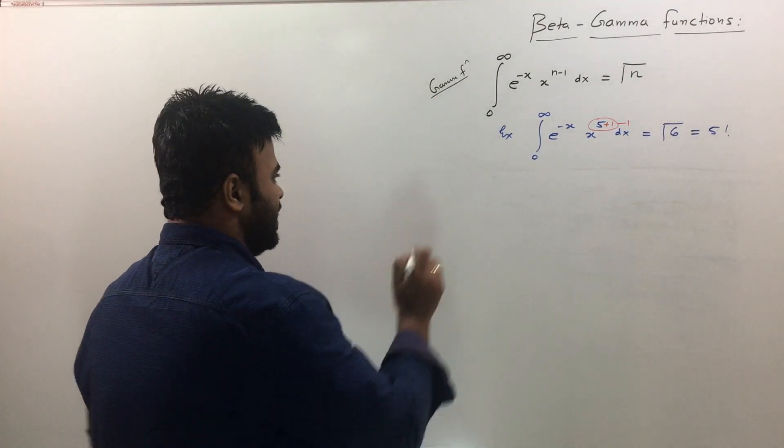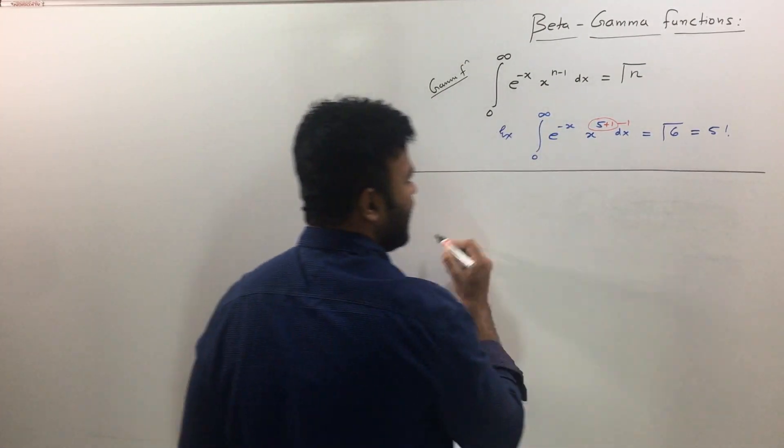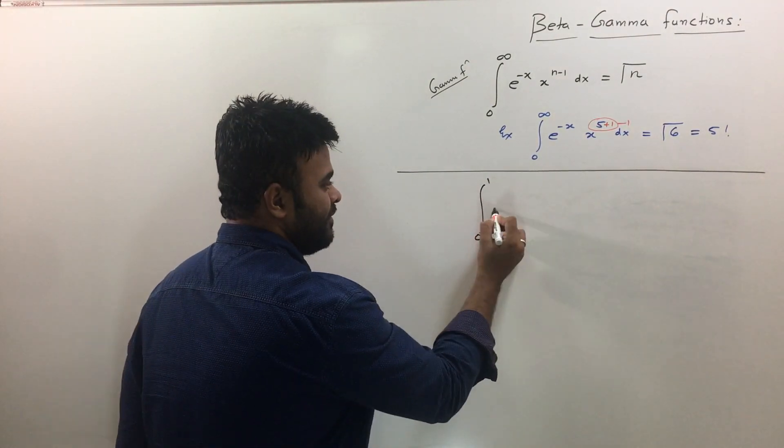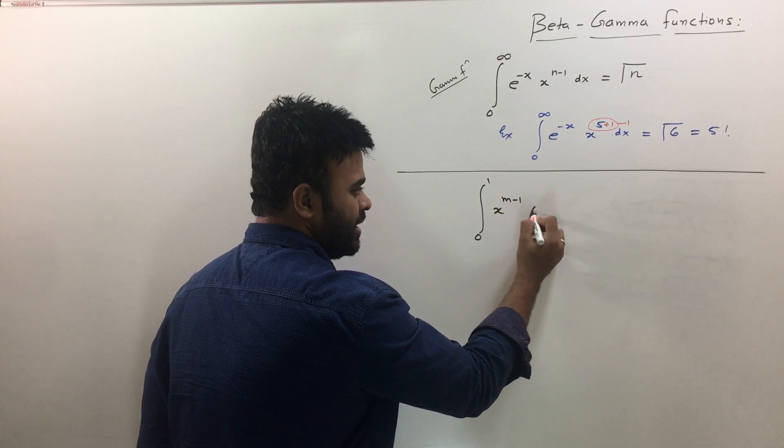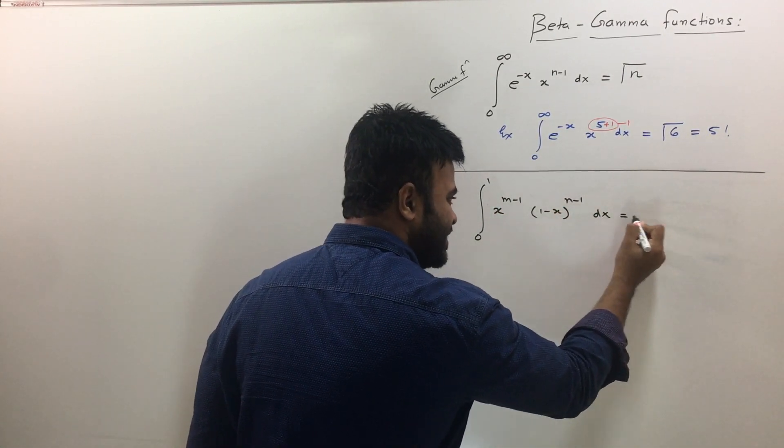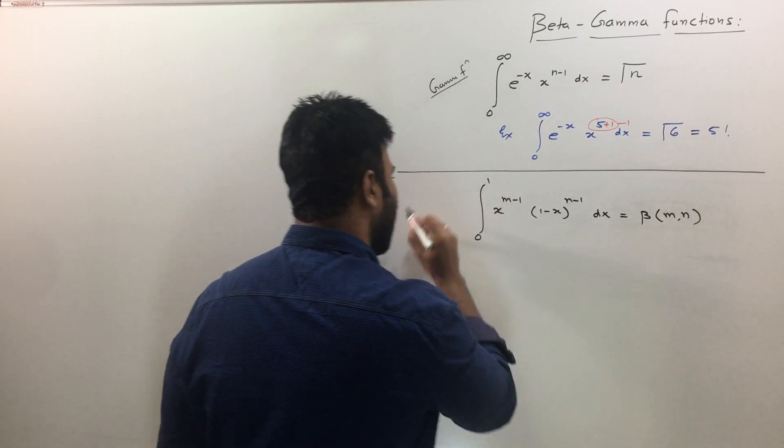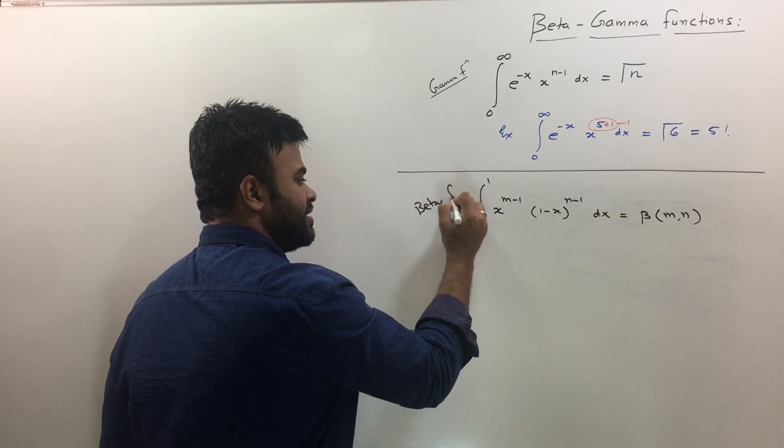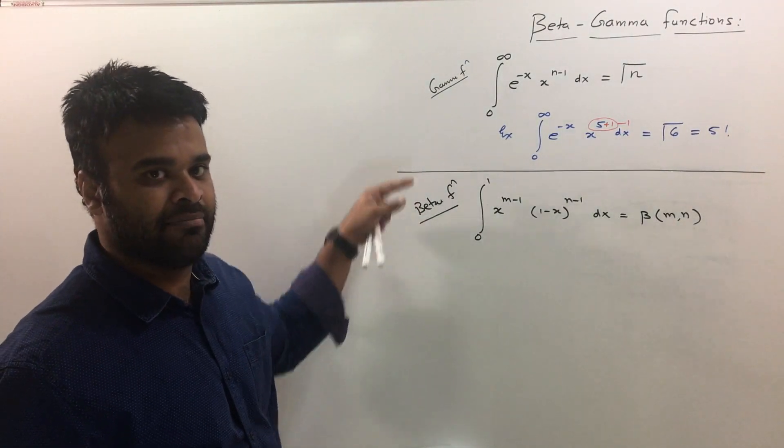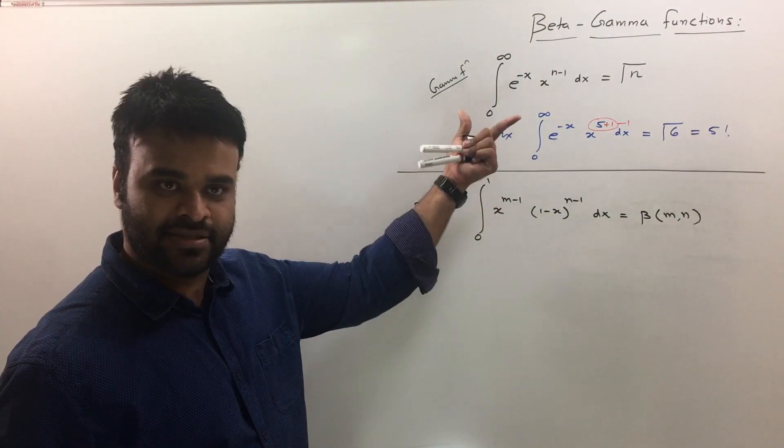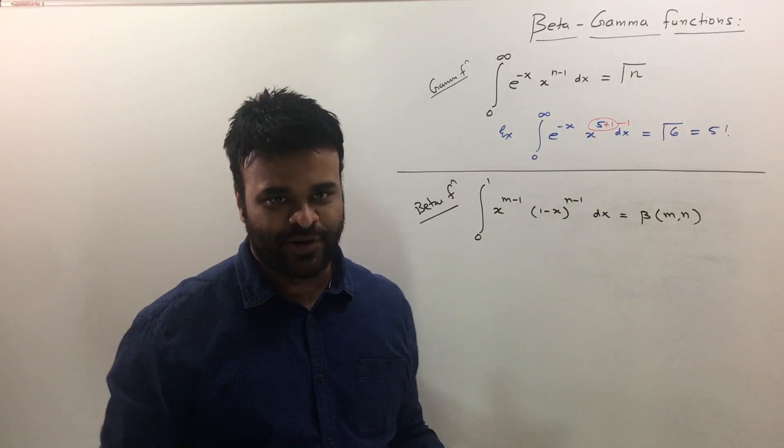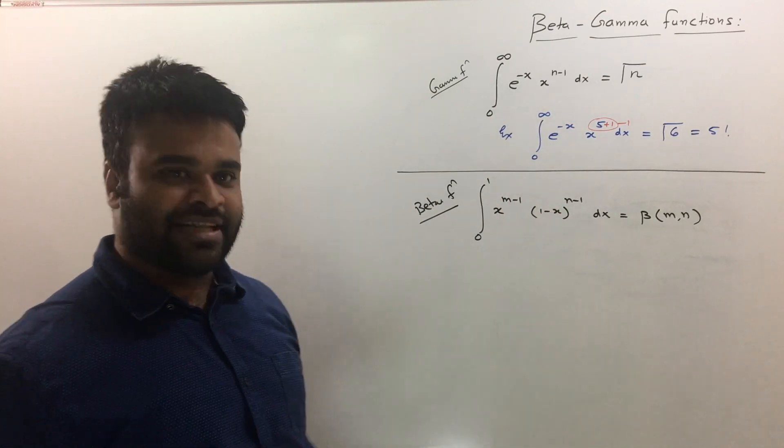You have a standard integral and that's its value and it is called as a gamma function. Now let me give you one more. Supposing if you have integral going from 0 to 1 and if you have x raised to m minus 1 and 1 minus x raised to n minus 1 dx, now this is written as beta m comma n and it is called as beta function.